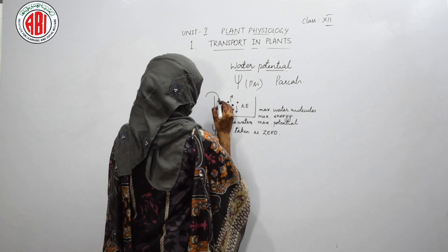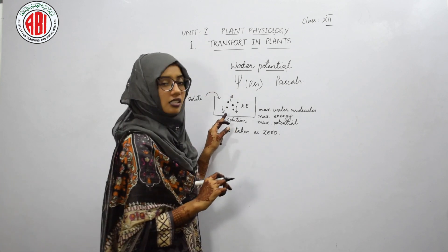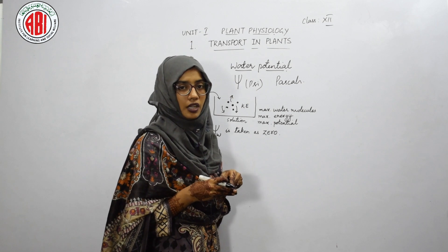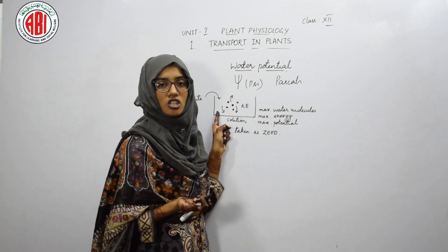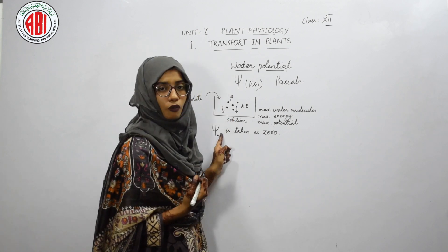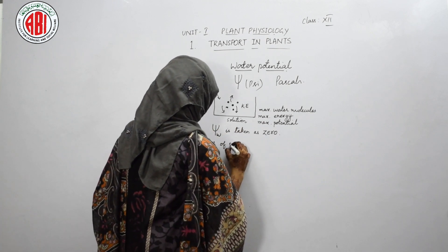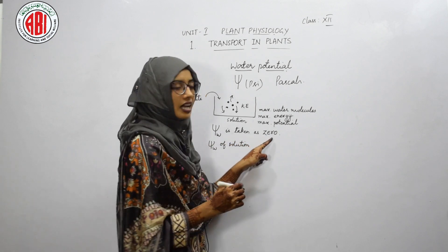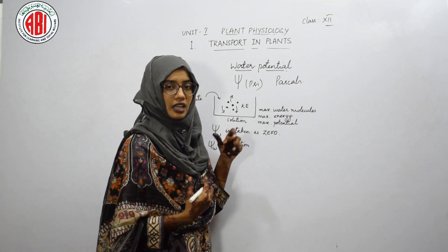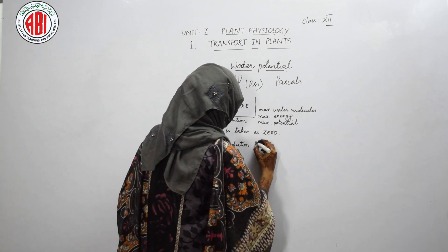When we add some solutes to pure water, it becomes a solution. In the solution, there are fewer water molecules present. Hence the energy and potential possessed by the water molecules are less when compared to pure water. So the water potential of solutions is always less than 0. As it contains solute, the water molecules become fewer in number, energy becomes minimum, and it is always less than 0.